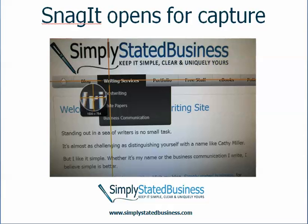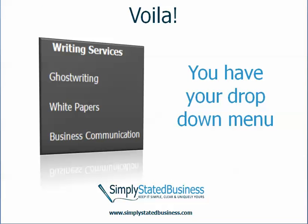This is what Snagit looks like. Those lines — if you're not familiar with the application — help you outline the screen or the image or whatever it is that you want to capture, and it'll capture just that. It's really pretty slick. And there you have it — now you've got your drop-down menu. It's really that simple.